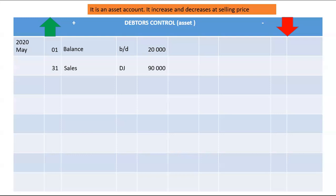Please note that the total of your debtors control that is in the CPJ relates to payments that were dishonored. These are payments that we received from debtors and recorded in the CRJ, but later on these payments bounced — the bank rejected them, possibly due to insufficient funds or other reasons. When these payments are rejected by the bank, we record them in the CPJ to cancel the initial payment recorded in the debtors control column under the CRJ.